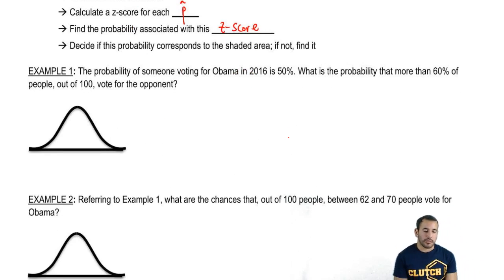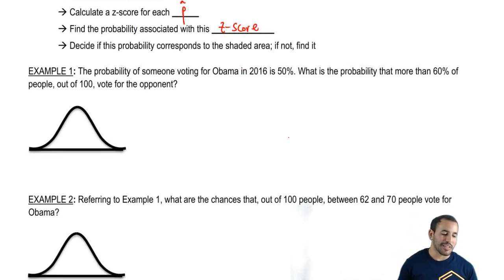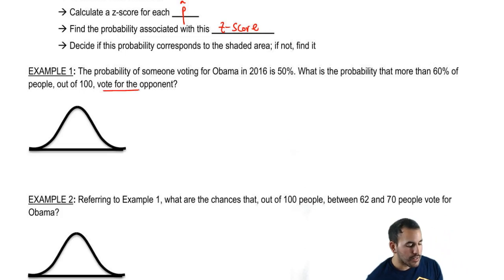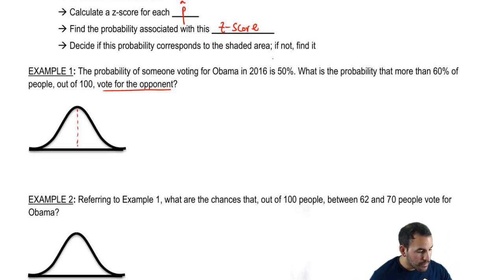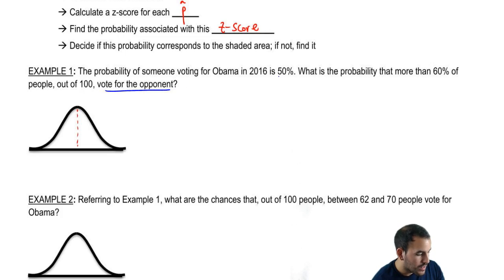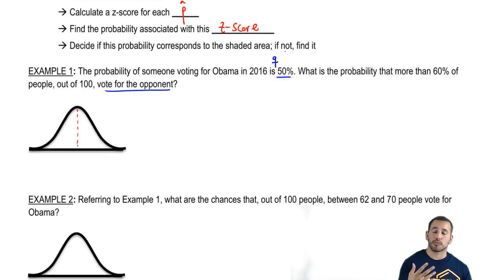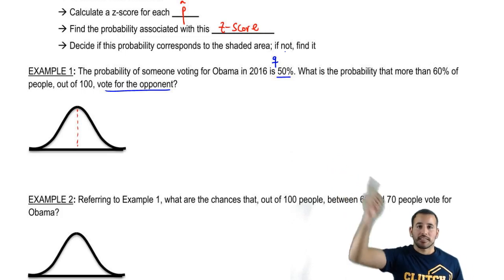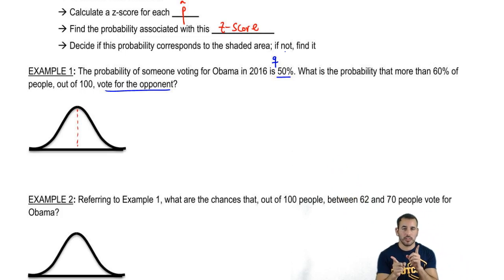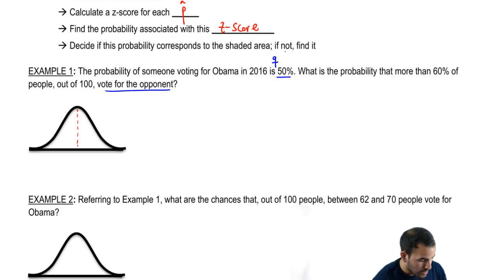The probability of someone voting for Obama in 2016 is 50% — totally made up. What's the probability that more than 60% of people out of 100 vote for the opponent? We're interested in voting for the opponent, so that 50% is actually our Q. Our P is 1 minus that, because the probability of voting for Obama is 50% and the probability of voting for the opponent is also 50%. It's 50-50, but it's very important to identify correctly.